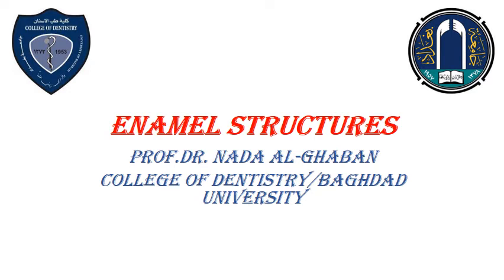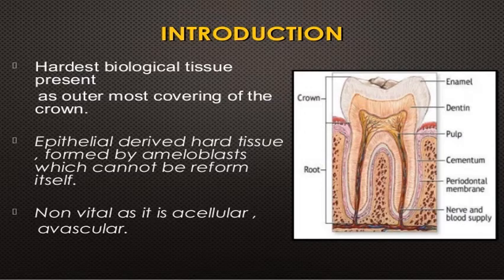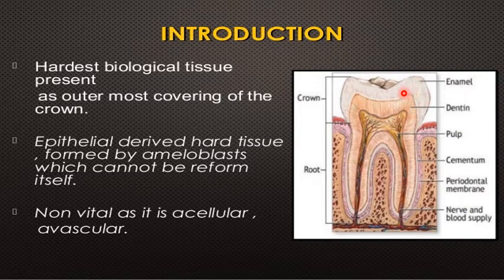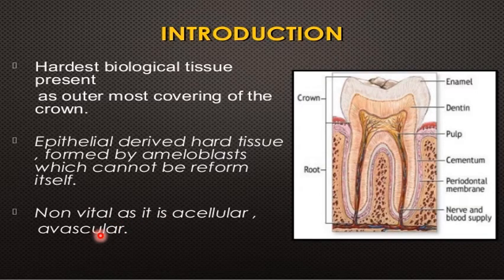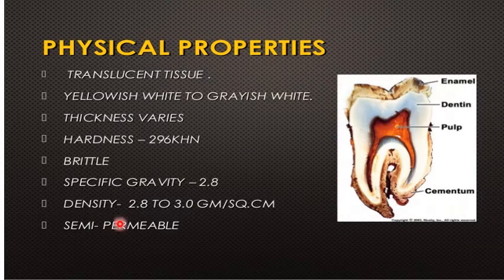Today we talk about enamel structure. Enamel is a biological tissue present as the outermost covering of the crown, covering the dentine. This represents the mature enamel — it is epithelially derived hard tissue formed by ameloblasts, as discussed in the previous lecture on amelogenesis, which cannot reform itself and is non-vital.